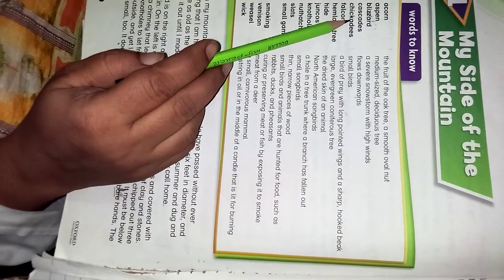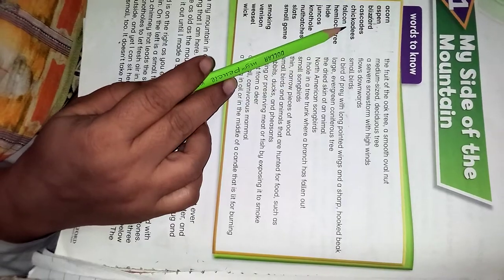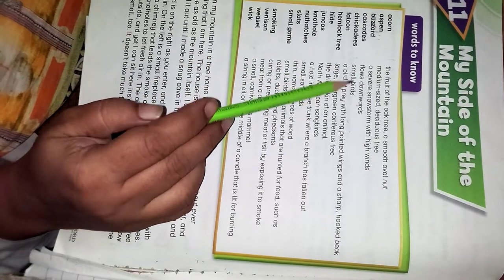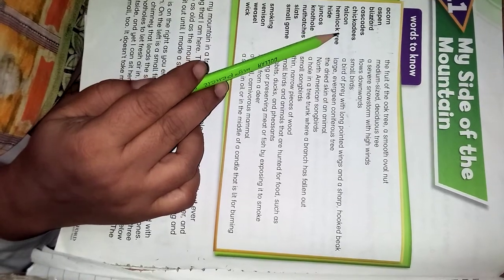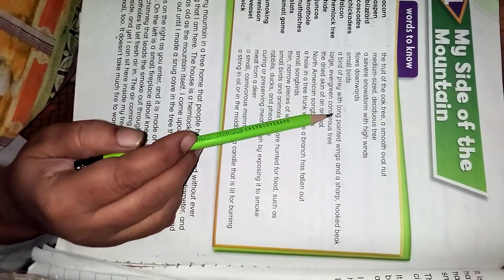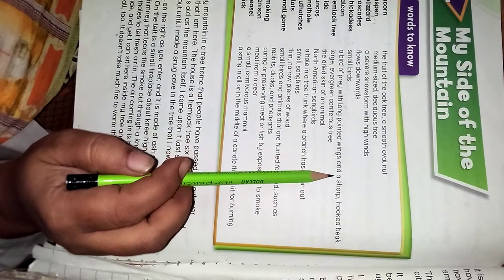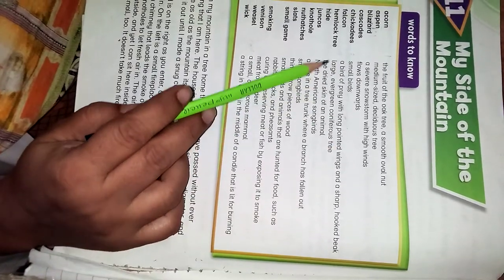Cascades: flows downwards. Falcon: a bird of prey with long pointed wings and a sharp hooked beak.